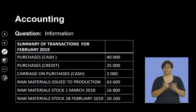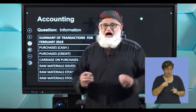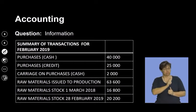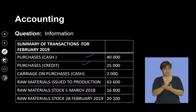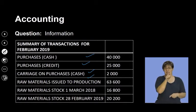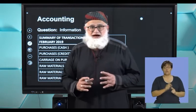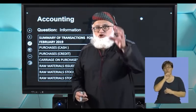Here we have an appetizer for you — something to get you into the section and understand how we deal with certain things. We are told the summary of transactions: cash purchases 40,000; credit purchases 25,000; carriage on purchases paid for cash 2,000; raw materials issued to production 63,600; raw material stock at the beginning and at the end. You are expected to use this information to draft up your raw materials stock account.